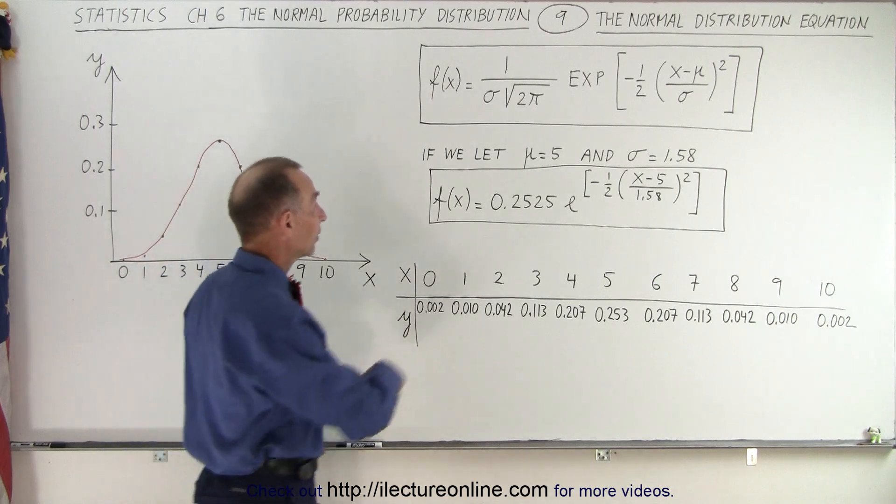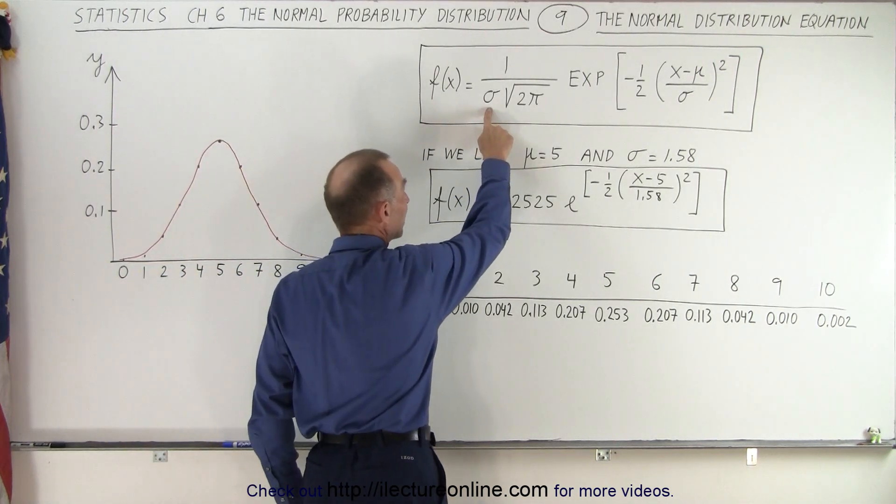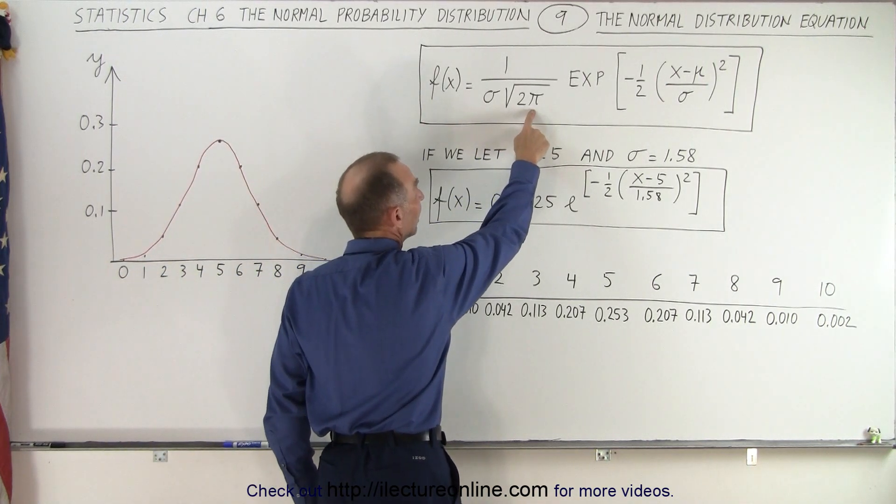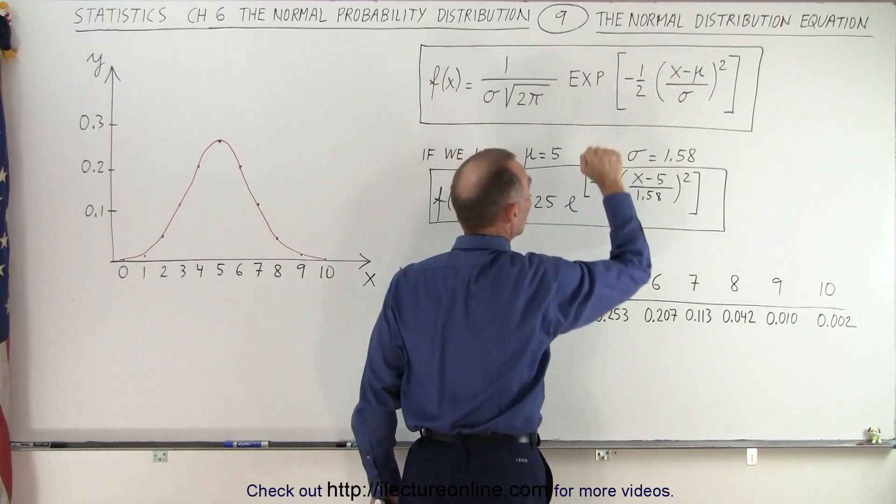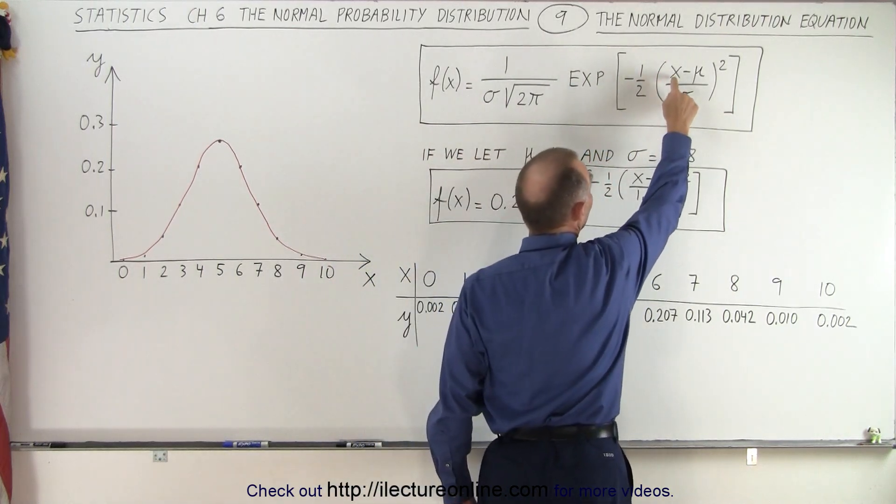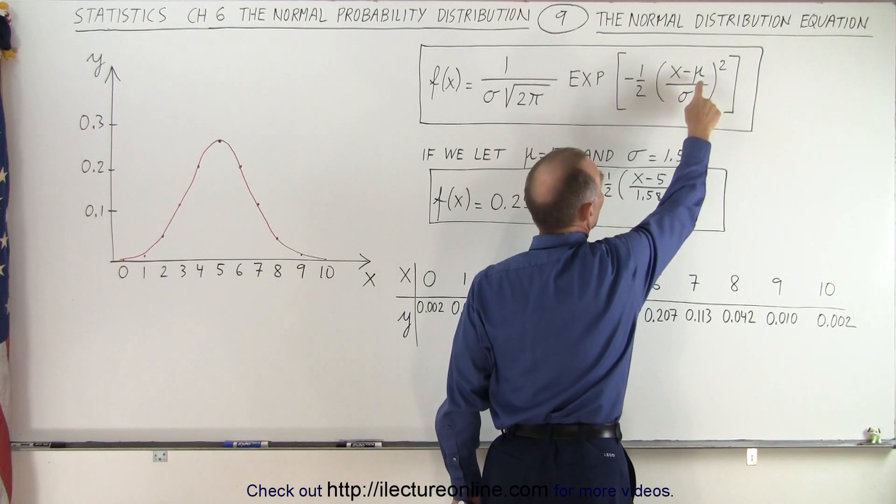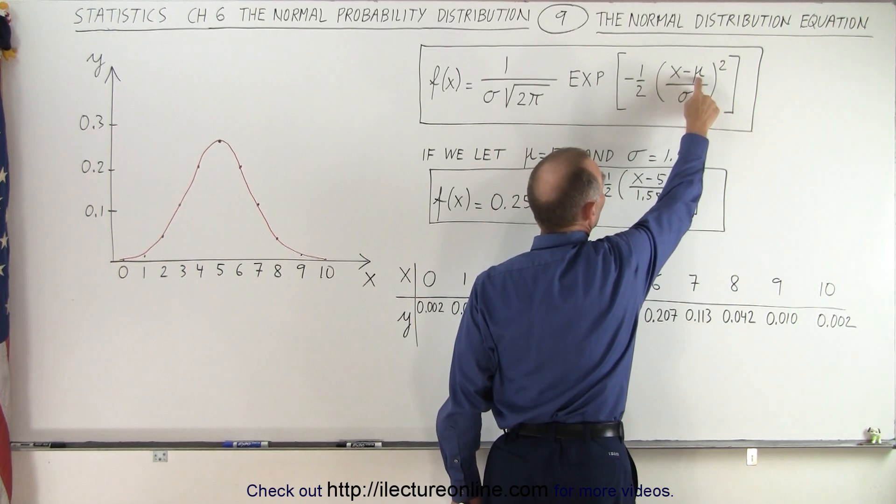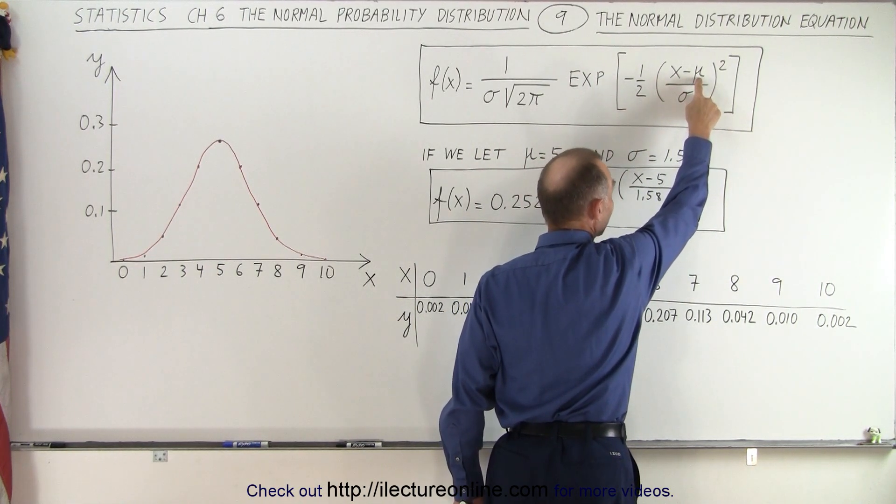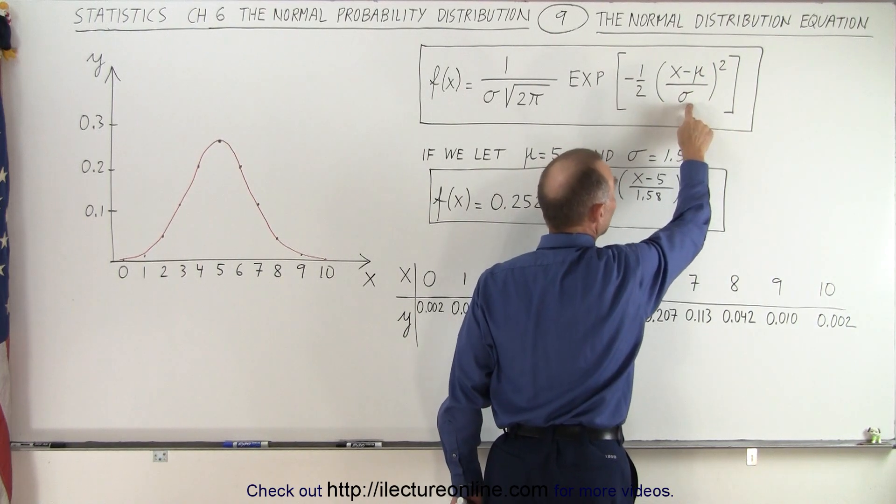Remember that sigma represents standard deviation. We know what 2 pi means. This means exponents. That means e to that exponent. And then we have x, which is the variable that we use, the independent variable. This is the mean or average. This is the standard deviation.